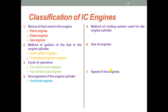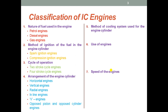The fourth classification is based on the arrangement of the engine cylinder - that is, the orientation of the cylinder. If the cylinder is in the horizontal plane, we call it a horizontal engine. If it is in the vertical direction, we call it a vertical engine. If the cylinders or pistons are placed in radial directions, we call it a radial engine. If the pistons are placed one after the other in a line, it is an inline engine. If the engine cylinders are placed in a V shape, it is a V engine. The last type is the opposite piston and opposite cylinder type, where the pistons or cylinders are kept in the opposite direction.